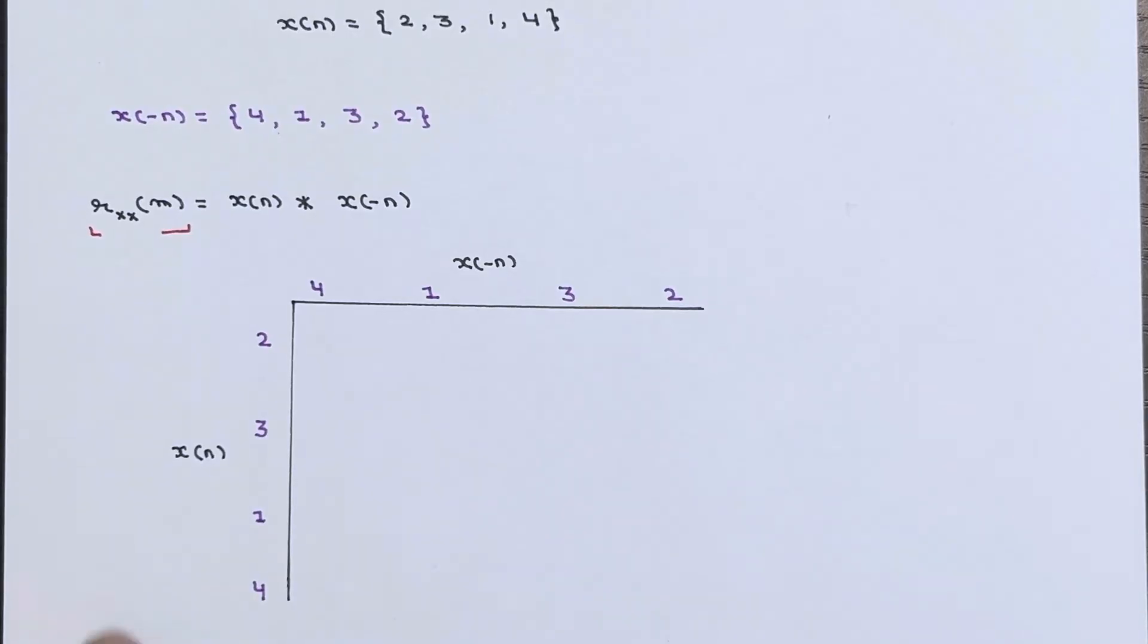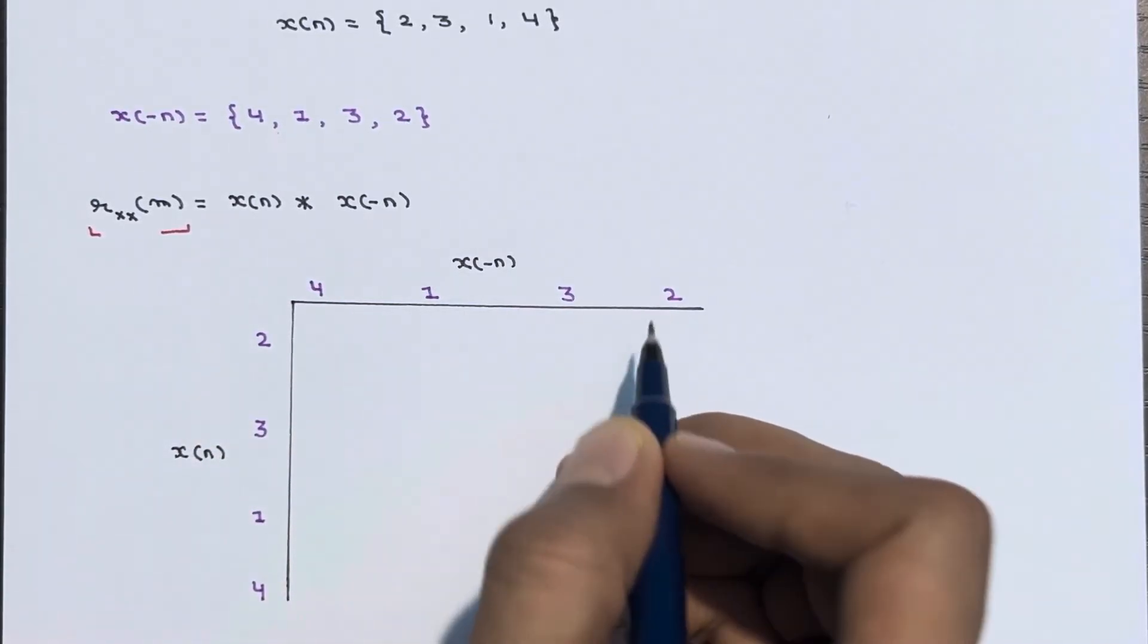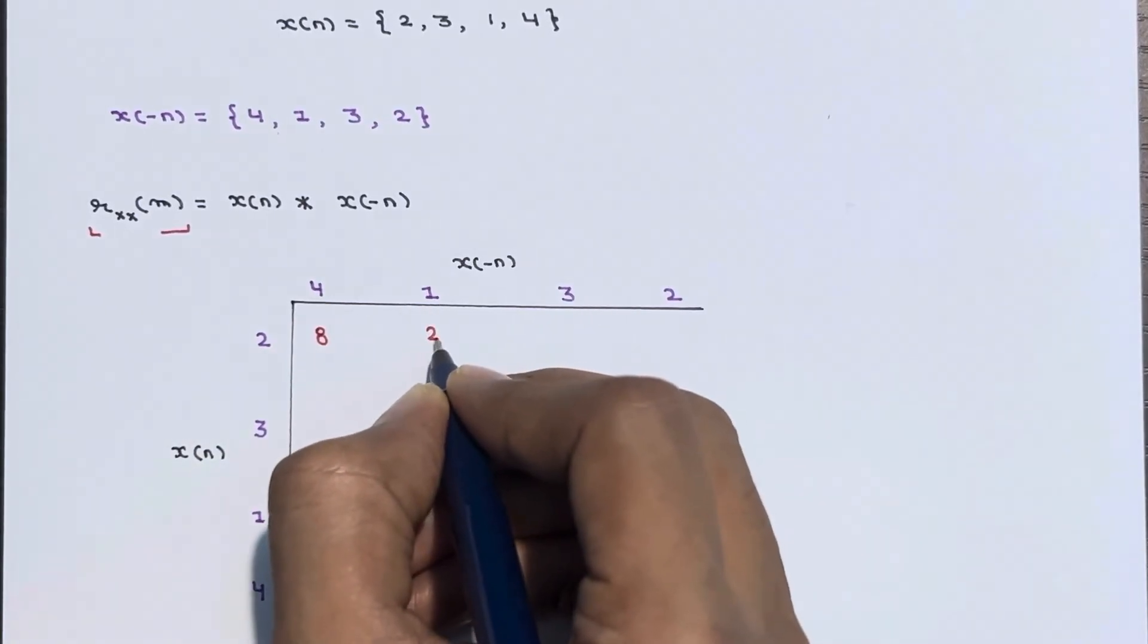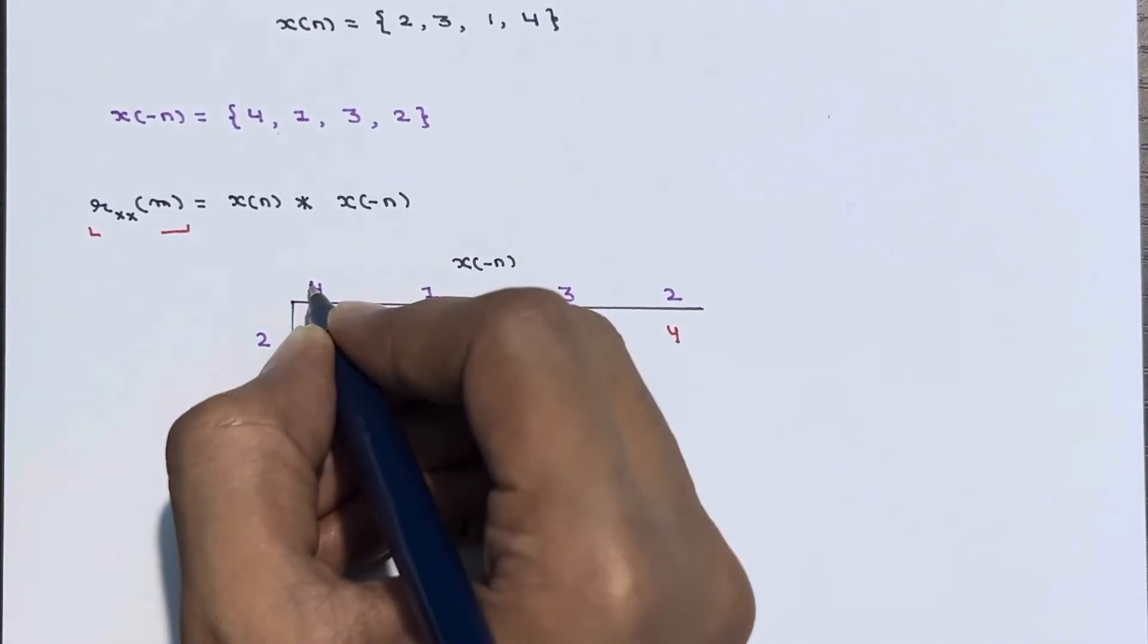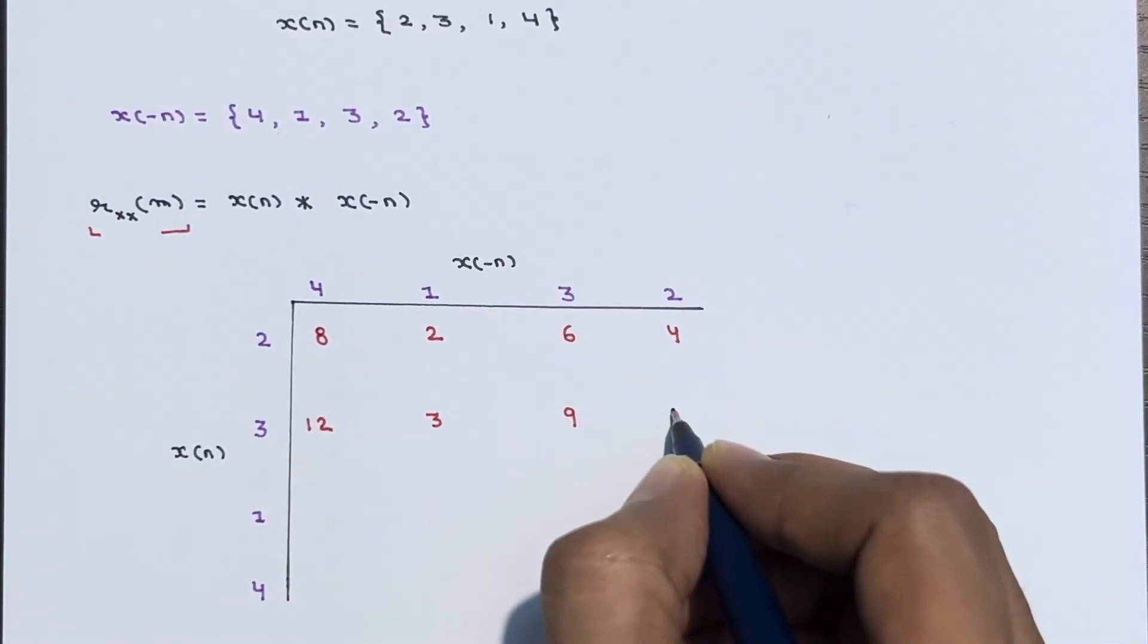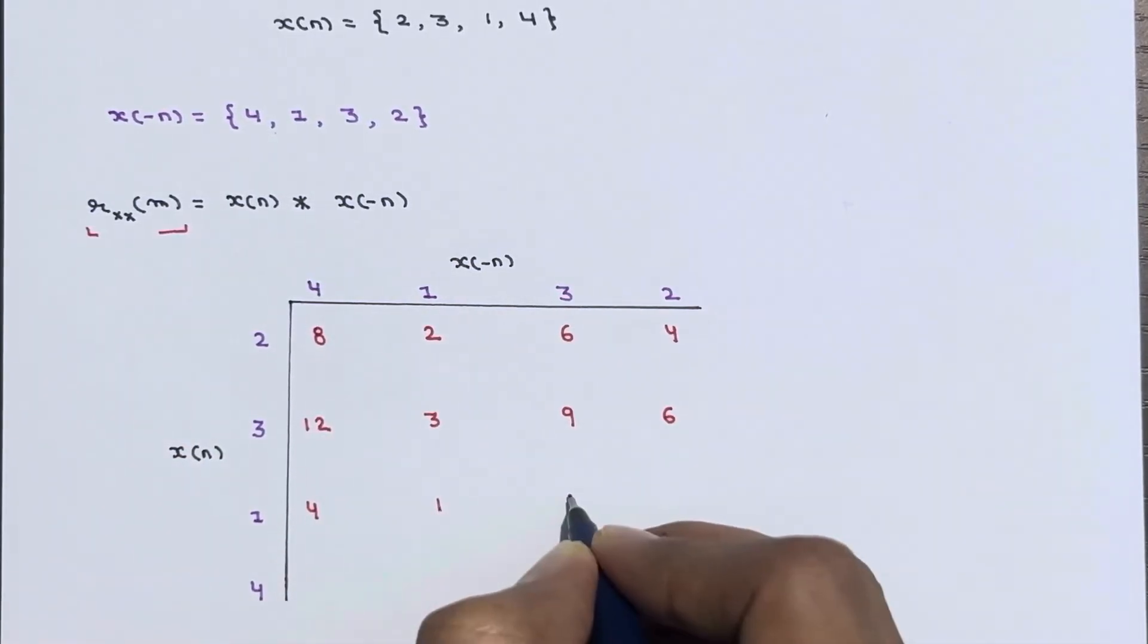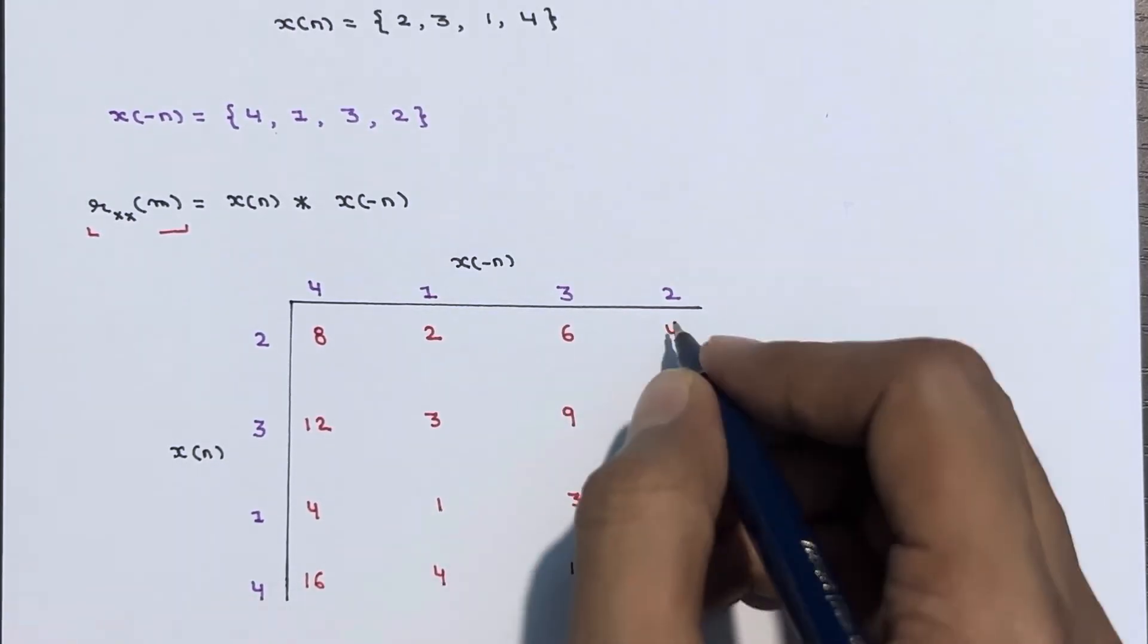Now to fill up this matrix array, multiply each element of the column with the corresponding elements of the row. For example, here 2 into 4 is 8. Here 2 into 1 is 2, 2 into 3 is 6, 2 into 2 is 4. Now for this, 3 into 4 is 12, here 3, 3 into 3 is 9, 3 into 2 is 6. Similarly for this, 1, so if you multiply you will get 4, 1, 3, and 2. Now for the last column, 4 into 4 is 16, 4 into 1 is 4, 4 into 3 is 12, and 4 into 2 is 8.